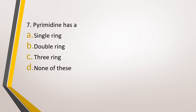Question number 7. Pyrimidine has a: option A, single ring; option B, double ring; option C, three rings; or option D, none of these. The correct answer is option A — pyrimidine is made of a single ring.